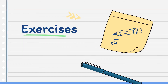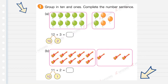Let's have some exercises. You can open your book to pages 188 to 189. Let's answer the activity. The instruction says to group in tens and ones and complete the number sentence. You can see here I already grouped the tens.